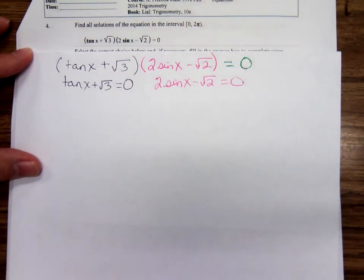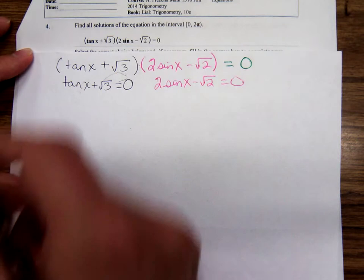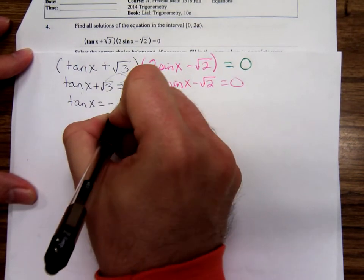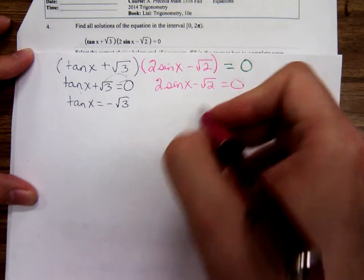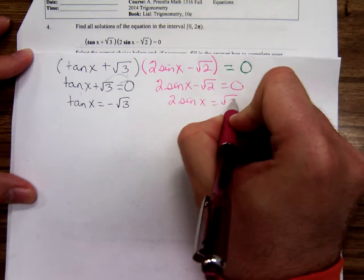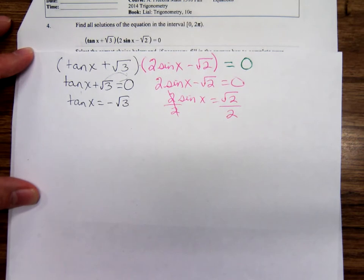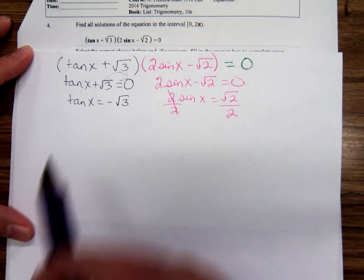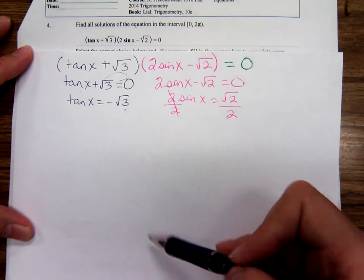Let's see. Get the trig function by itself. Here, what would I do? I guess I could move the square root of 3 over. So I have tangent x equals negative square root of 3. What about right here? Move the square root of 2 over. Square root of 2 over 2. And so now we're ready to look at the unit circle.